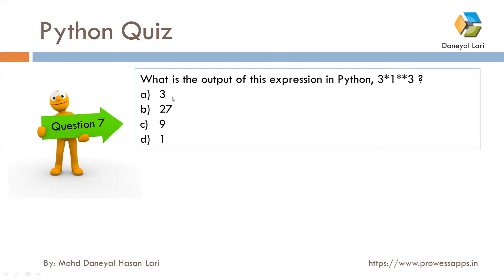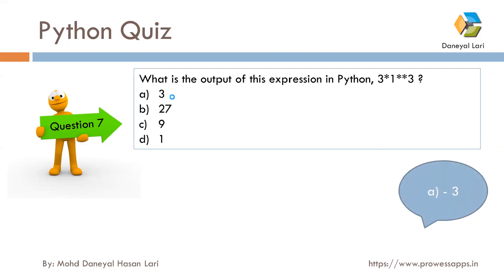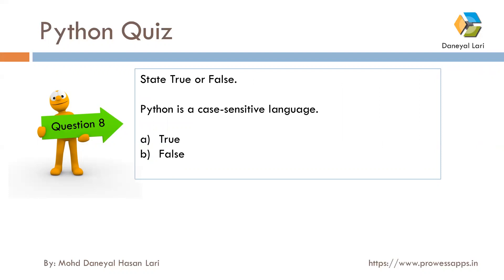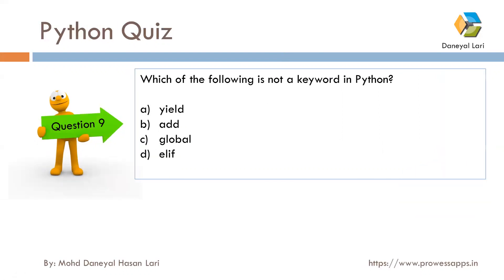Next question: state true or false, Python is case sensitive language. Yes, Python is a case sensitive language, so the correct answer is A, true. Ninth question was: which of the following is not a keyword? Add is not a keyword. We have used it many times in the form of functions. Yield, global, and elif are keywords. The correct answer is B, add.